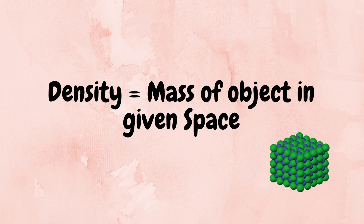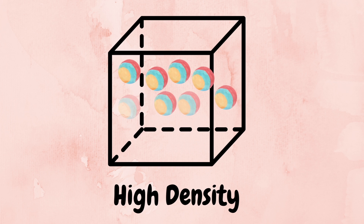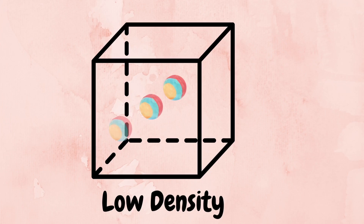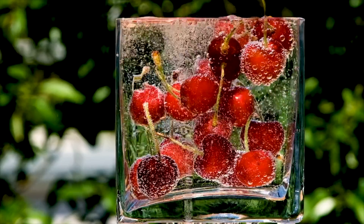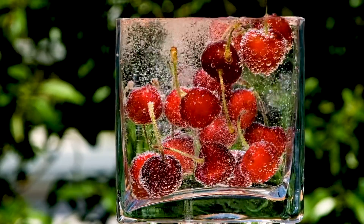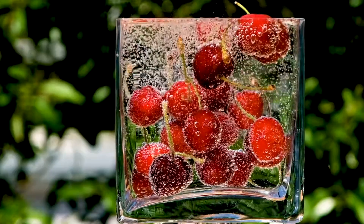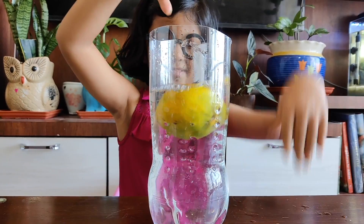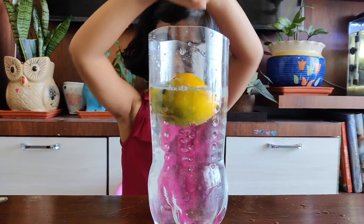What determines buoyancy is density, which is how much mass of an object is in a given space. An object with high density means there is a lot of mass in a given space, while an object with low density means there is less mass in a given space. For an object to float in a liquid, its density should be less than the liquid.